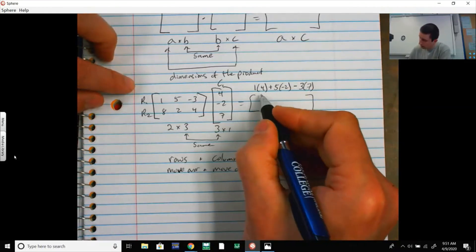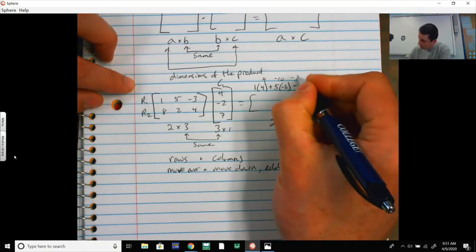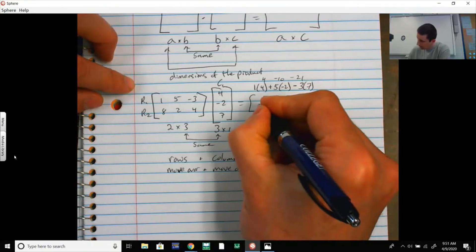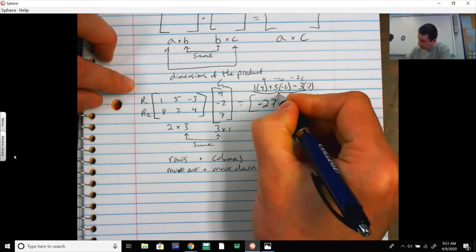1 times 4 is 4, so I get 4 minus 10 minus 21, so -6, -27. That is my first answer right there. All of that went right there.